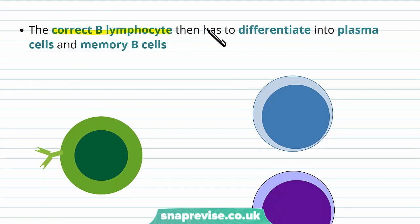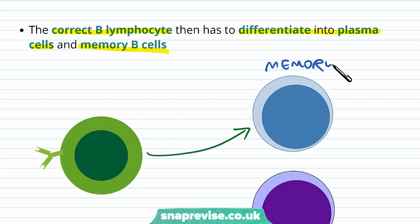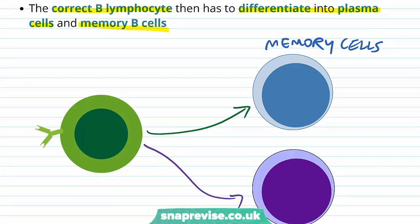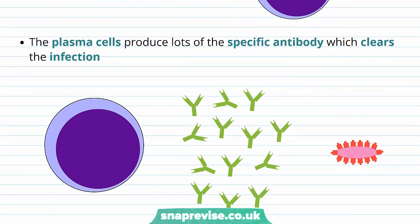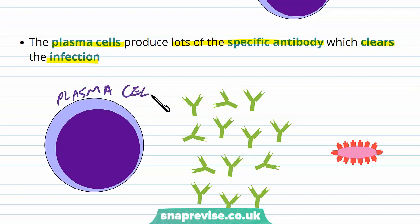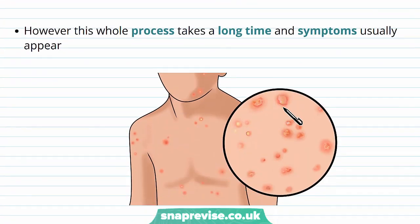After this, the correct B lymphocyte needs to differentiate into both plasma cells and memory cells. When it differentiates into memory cells, these circulate in the blood to keep a record of this pathogen. When they differentiate into plasma cells, the plasma cells make antibodies which get secreted into the blood, and they can produce lots of this specific antibody to help clear the infection. So we have an army of plasma cells making the same type of antibody because they're all clones of each other, and these swarms of antibodies can deal with the pathogen. This is how the primary immune response works — it's very good at clearing the pathogen, but the whole process takes a long time.